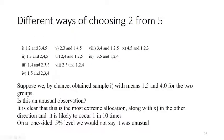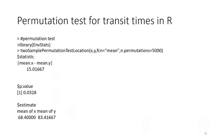We get another p-value and an estimated difference in the means, which is more or less the same as before, along with the estimates of the two means. The nice thing about the permutation test is that it makes no assumptions whatsoever, except that the data are independent.